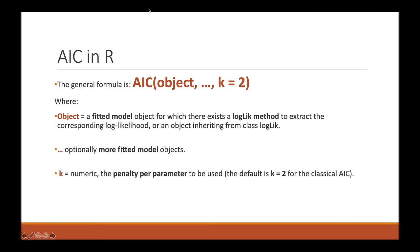To do AICC in R, you can use this general formula where 'object' is your fitted model object where there exists a log-likelihood method to extract the corresponding log-likelihood, or an object inheriting from this class. The option to add any more fitted models that you may make is dot dot dot, and k is the penalty per parameter.